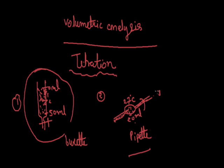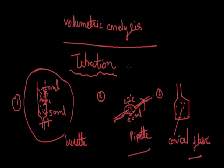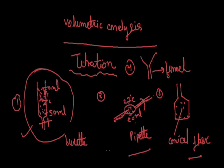The third apparatus is called a conical flask. The fourth apparatus is called a funnel. Basically, in volumetric analysis these are the important apparatus. Now we will discuss what is the meaning of volumetric analysis and how it can be applied for the determination of unknown concentration of an unknown acid-base or oxidizing or reducing agent.